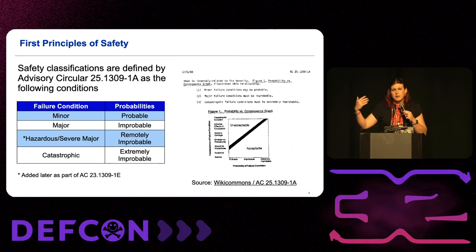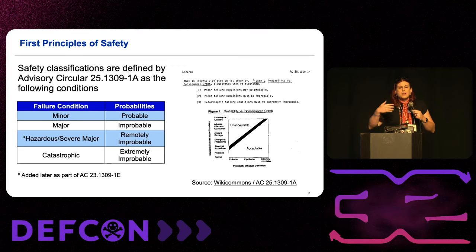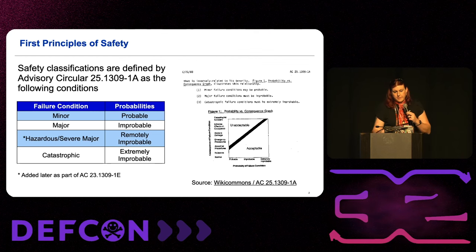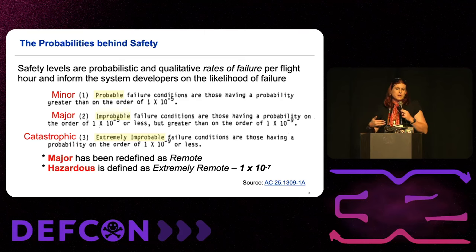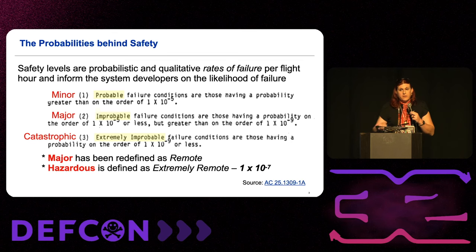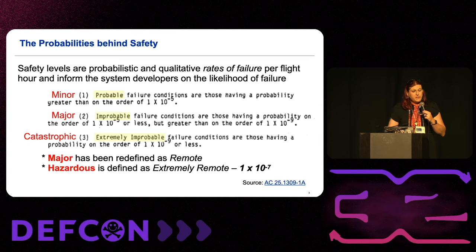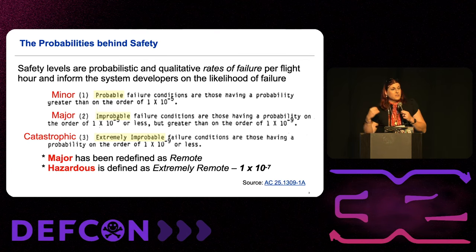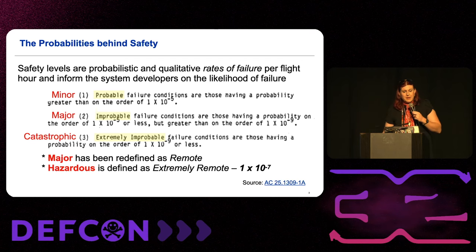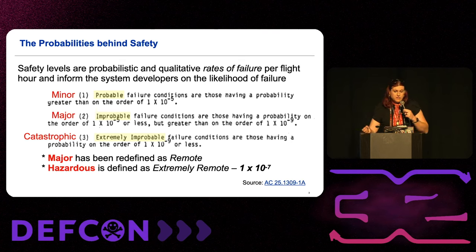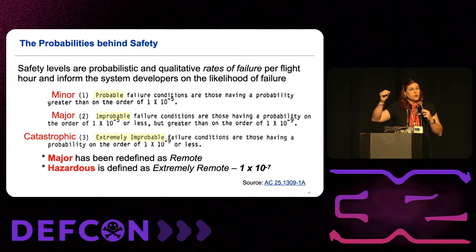There's a line that runs right between them that says acceptable and unacceptable. You have to develop the system in order to understand what the system effects are going to be. Those failure classifications actually have probabilities behind them as defined in the Advisory Circulars. For a minor classification, that's a probable failure condition on the order of 10⁻⁵. Major is 10⁻⁹, which got reclassified as 10⁻⁷. Hazardous is now 10⁻⁷. Catastrophic is 10⁻⁹ or less.